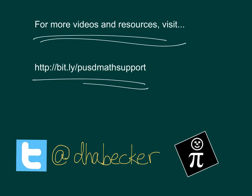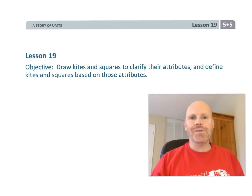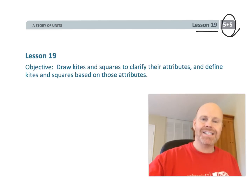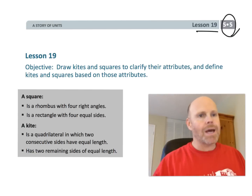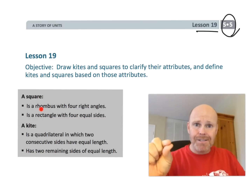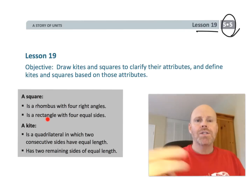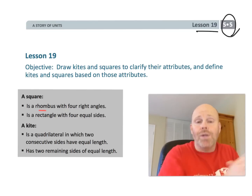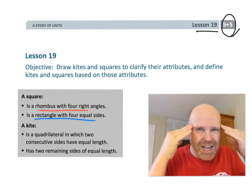This is fifth grade module 5 lesson 19. In this lesson we're going to continue comparing shapes, focusing on kites and squares and their properties. A square is a rhombus because a rhombus has four congruent sides, and it's a rectangle because it has four right angles. So a square is a rhombus with four right angles, or a rectangle with four equal sides.